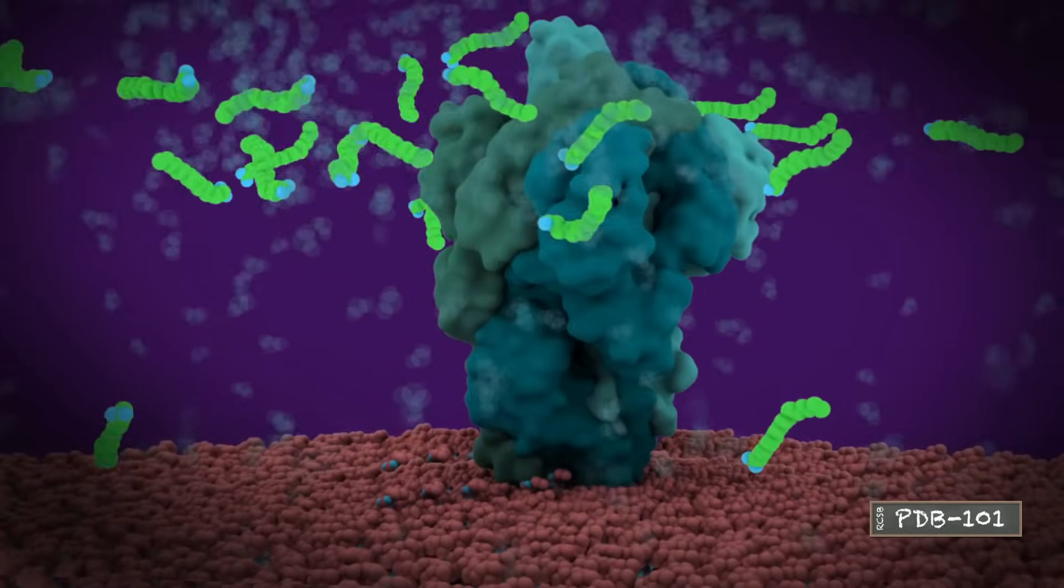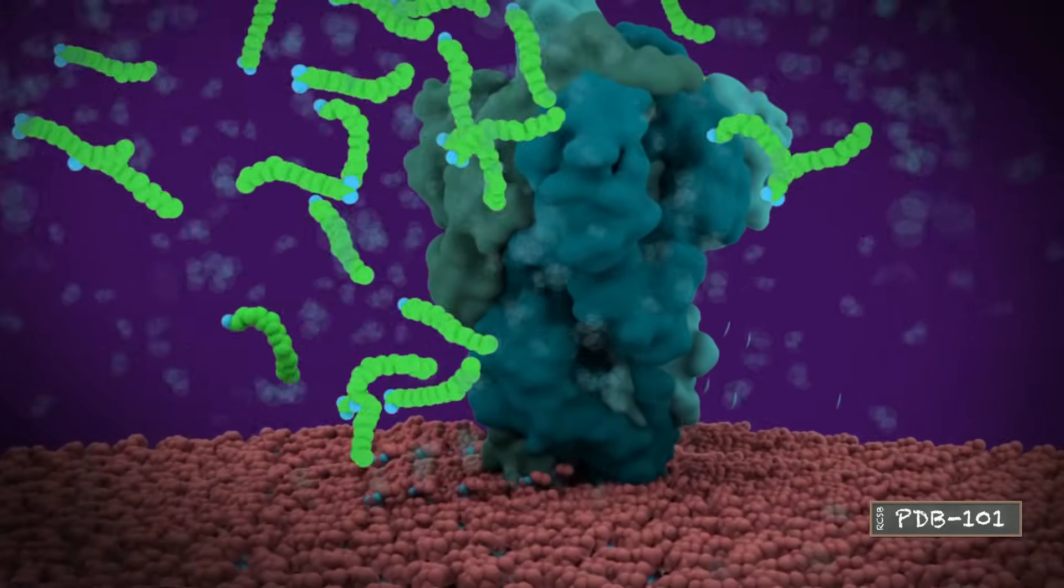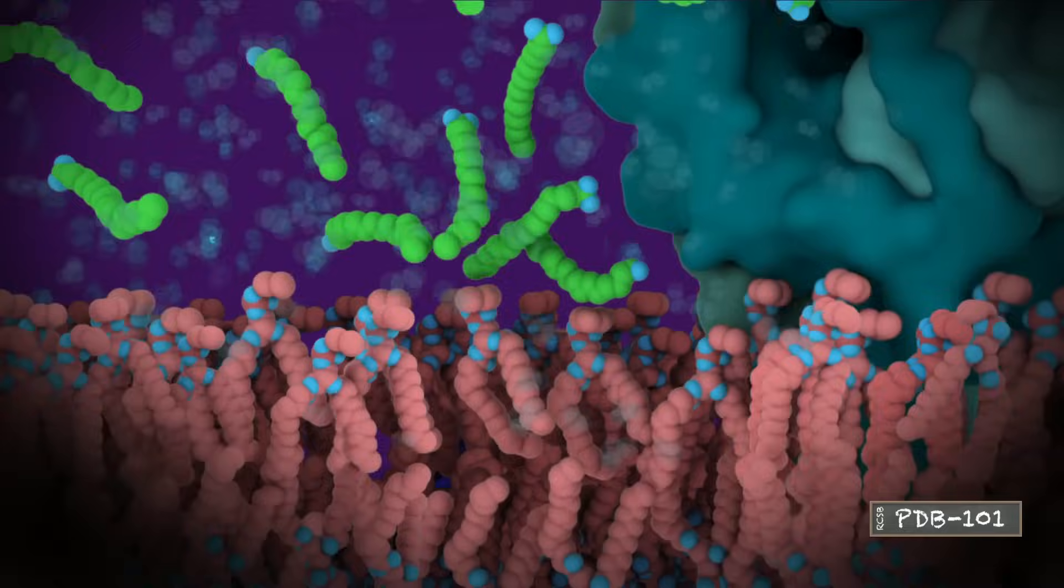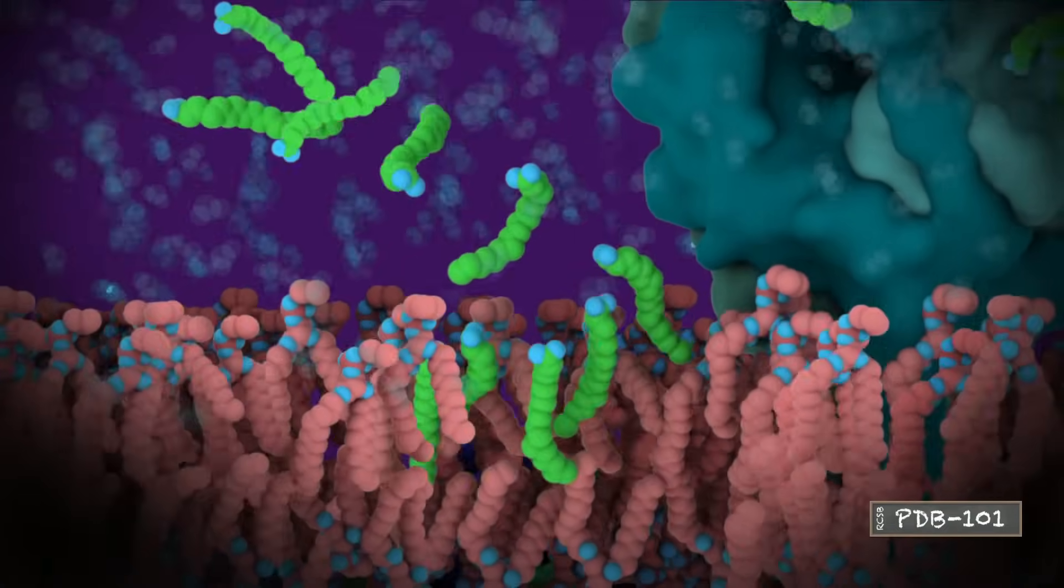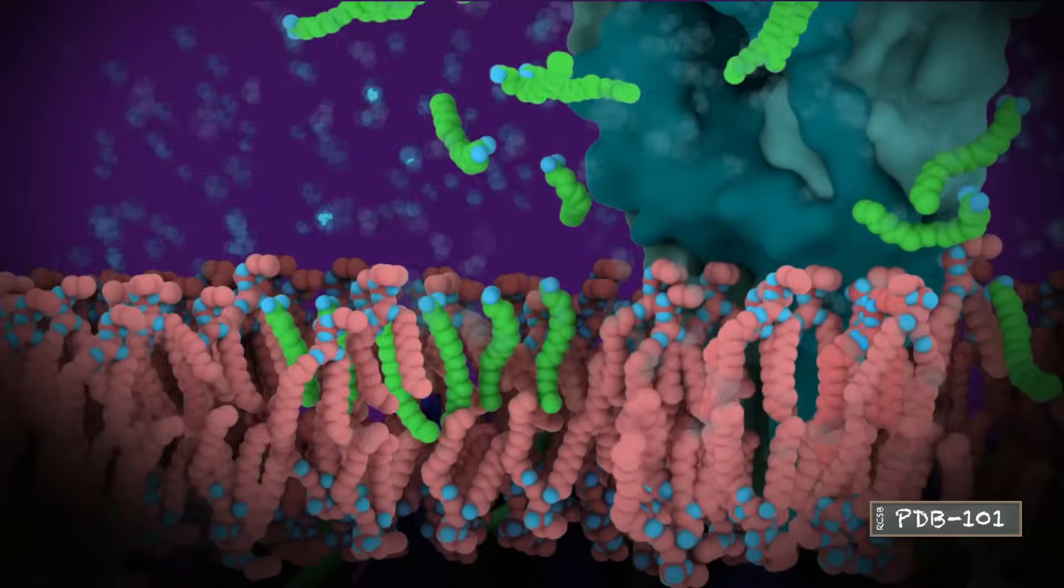The lipid ends of the soap molecules are attracted to the lipids in the membrane. They take advantage of the presence of membrane proteins which can perturb the neatly organized bilayer to insert themselves into the viral membrane.